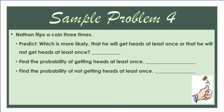Nathan flips a coin three times. Predict which is more likely: that he will get heads at least once, or that he will not get heads at least once. Since there are two sides of a coin, it's an even chance — either heads or tails. So you have a 50-50 chance.